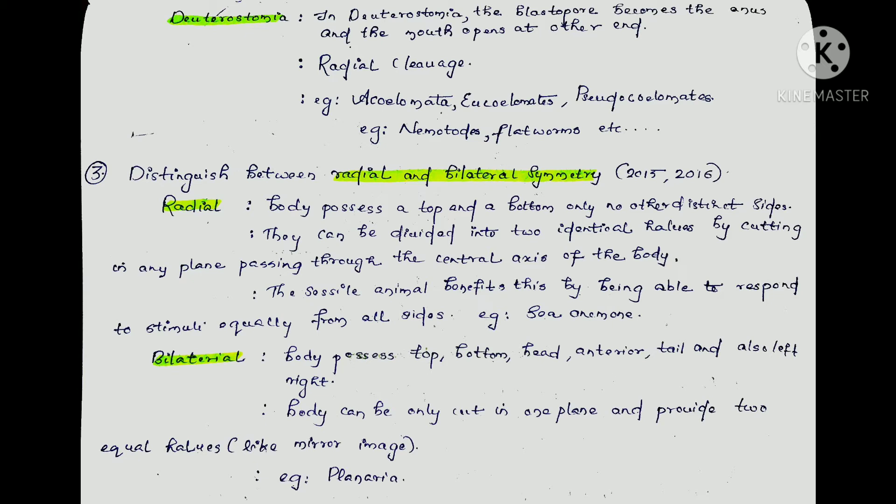The next question is: distinguish between radial and bilateral symmetry. In radial symmetry, the organism's body possesses a top and a bottom only — no other distinct sides. The body can be divided into two identical halves by cutting in any plane passing through the central axis. The sessile animal benefits by being able to respond to stimuli equally from all sides. Example: sea anemone.